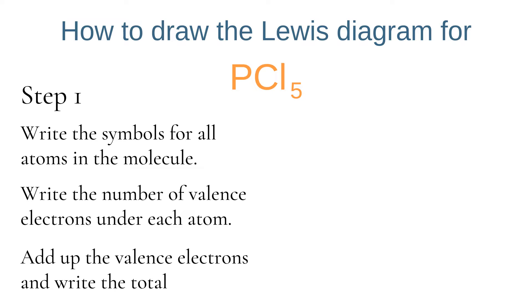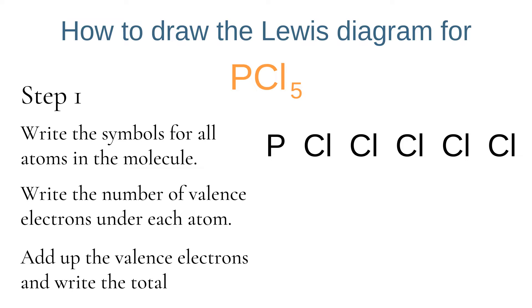To start with we will be looking at how to draw the Lewis diagram for PCl5. The first step is to write the symbols for all of the atoms in the molecule. In this case we have 1 phosphorus and 5 chlorine atoms. We then write the number of valence electrons each atom has underneath its symbol: phosphorus has 5 valence electrons and chlorine has 7. Finally we add up the total number of valence electrons.